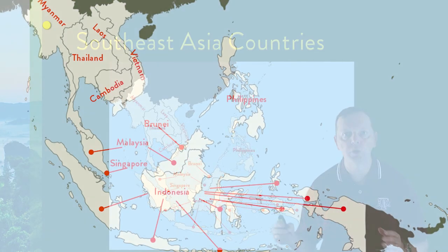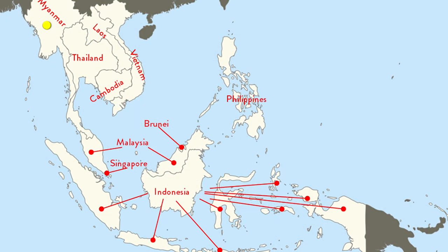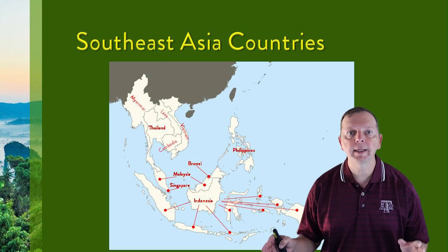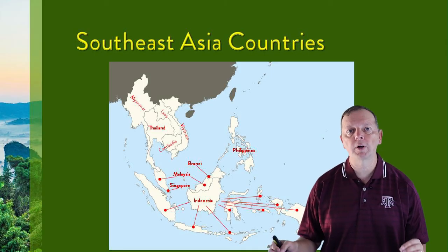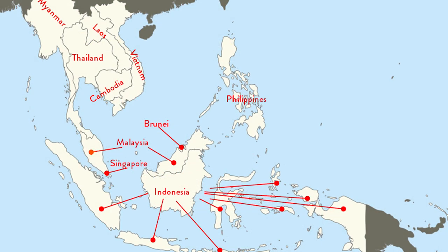On the mainland, we have Myanmar, which used to be known as Burma. We have Thailand, we have landlocked Laos, we have Vietnam, and we have Cambodia. At the south of the Malay Peninsula is the western part of a country named, oddly enough, Malaysia. The eastern portion of Malaysia is found on the northern shore of an island known as Borneo.